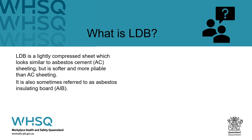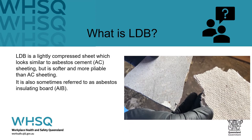LDB is a lightly compressed sheet which looks similar to asbestos cement, known as AC sheeting, but it is softer and more pliable. It is also sometimes referred to as asbestos insulation board.